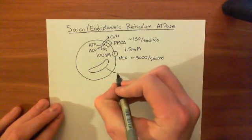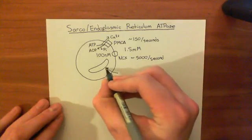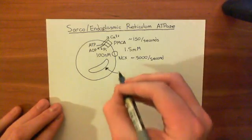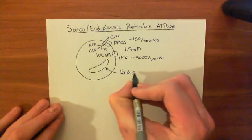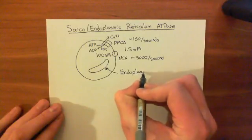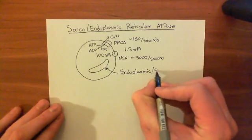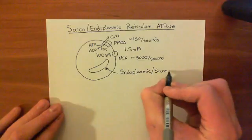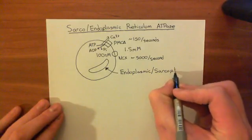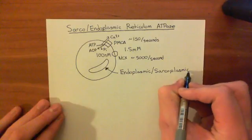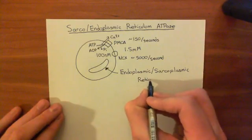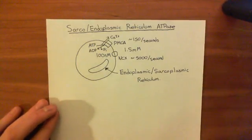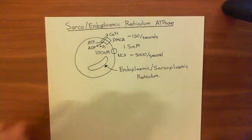This organelle here is the endoplasmic reticulum. Now, if this cell was a skeletal muscle cell, the endoplasmic reticulum would no longer be called the endoplasmic reticulum — instead, the equivalent organelle in skeletal muscle is called the sarcoplasmic reticulum. But it does the same thing as far as calcium homeostasis is concerned, so I'll put endoplasmic/sarcoplasmic reticulum. Calcium levels in the endoplasmic or sarcoplasmic reticulum are very, very high.